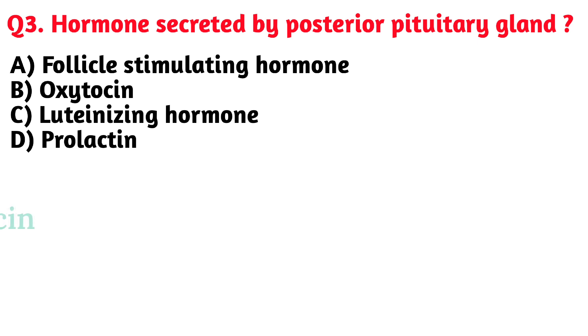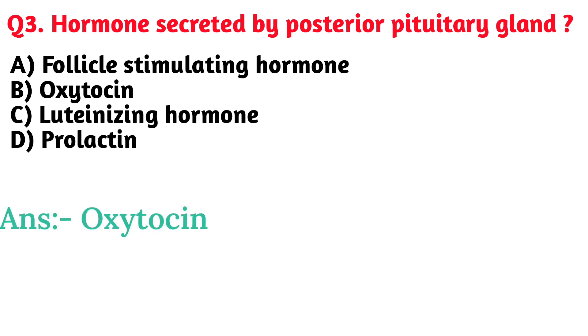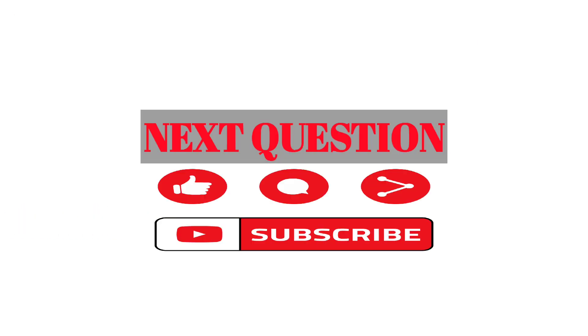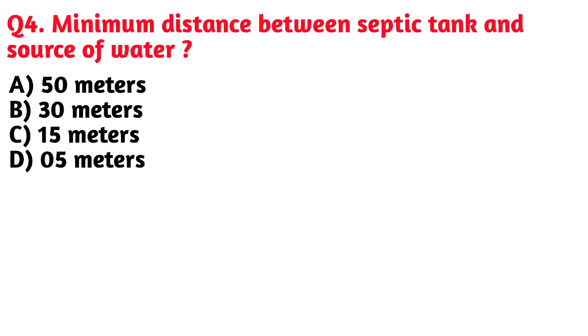Next question: Hormone secreted by posterior pituitary gland. Option B. Oxytocin is the correct answer.